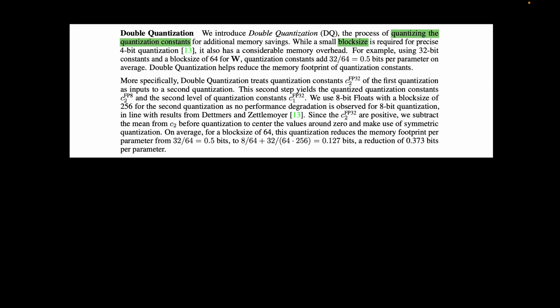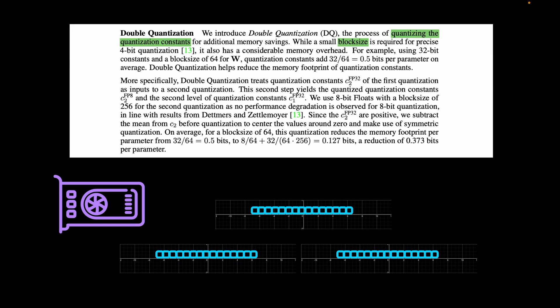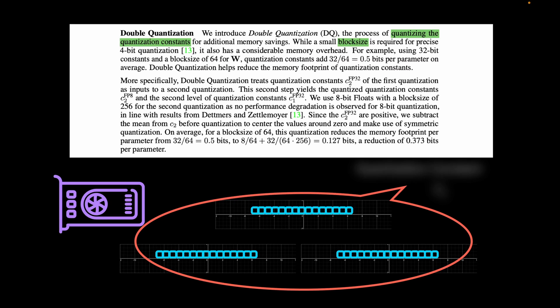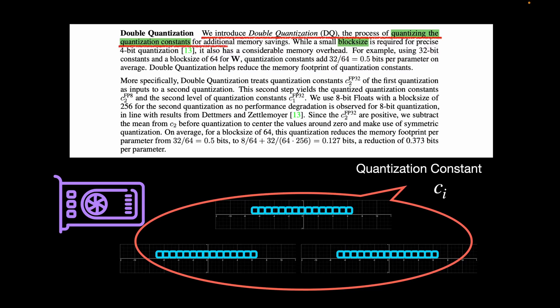Let's now move on to the next contribution of the paper, which is double quantization. Because the intention of QLoRa is to train on a single GPU, it's essential to squeeze every bit of memory as possible. If we recall blockwise quantization, we saw that we use 64 blocks to quantize the weights, and each of these blocks has a quantization constant C. So double quantization is the process of quantizing the quantization constants C for additional memory savings. And through double quantization, we gain half a bit per parameter on average.